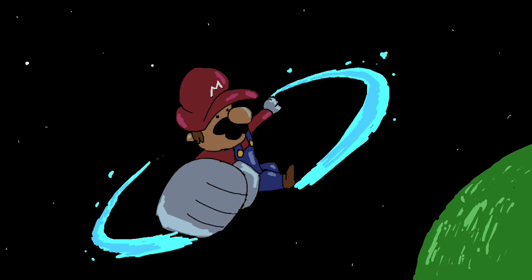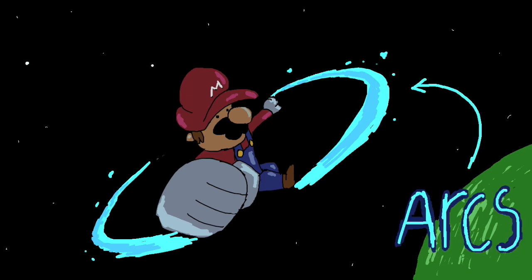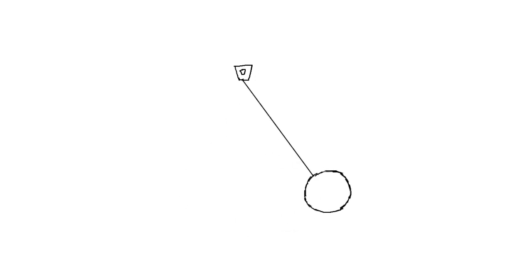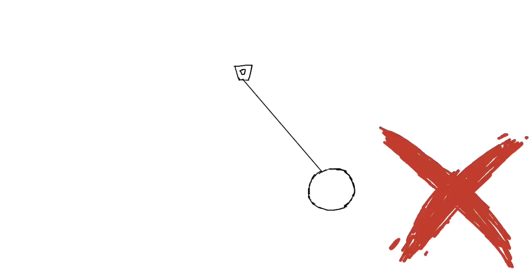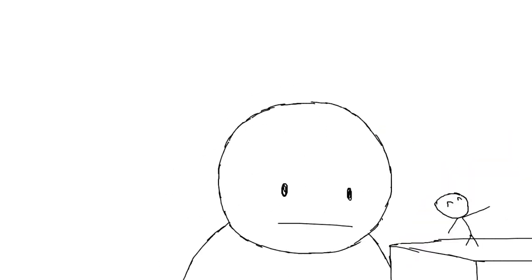The second step is introducing arcs into movements. Arcs are a great way to make animations look smooth and way more natural. Without them, the majority of movements would look wrong.